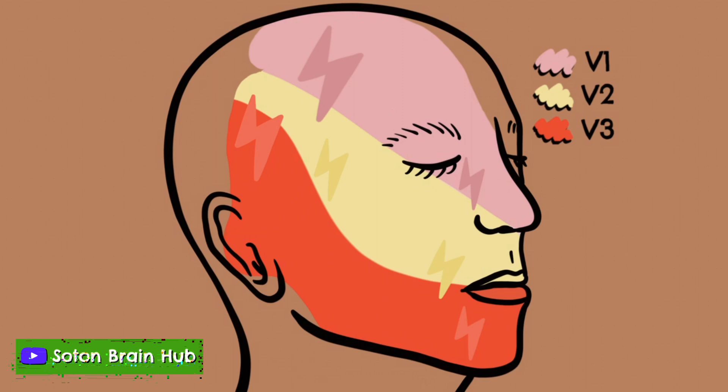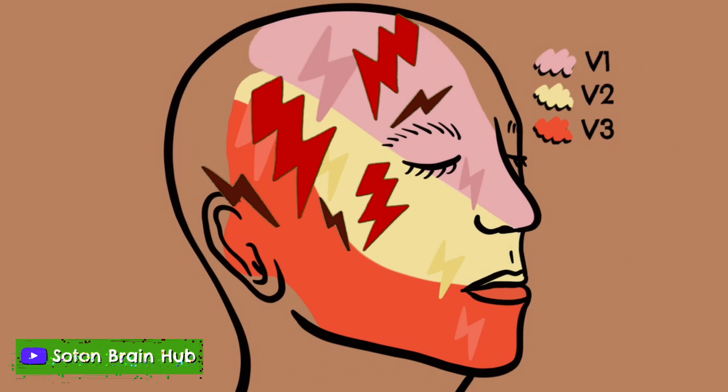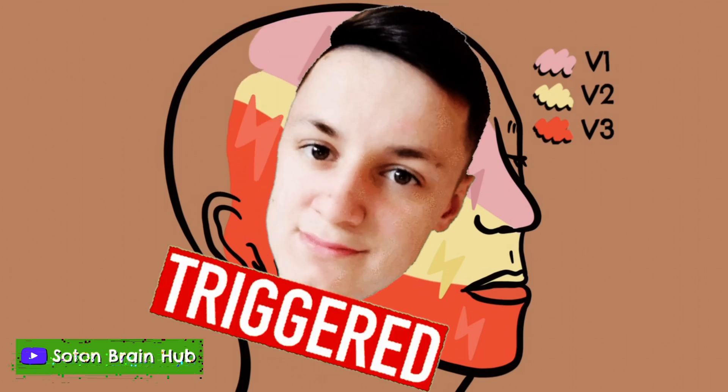B. Pain has at least one of the following characteristics: 1. Intense, sharp, superficial or stabbing. 2. Precipitated from trigger areas or by trigger factors.